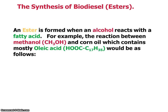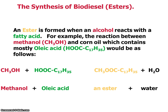An ester is formed when an alcohol reacts with a fatty acid. For example, the reaction between methanol and corn oil, which contains mostly oleic acid, would be as follows: methanol plus oleic acid gives us an ester and water. Lipids, fats, and oils have a three-ester bond — they're triglycerides. The process we're going through here is called transesterification, where we're actually breaking these bonds.